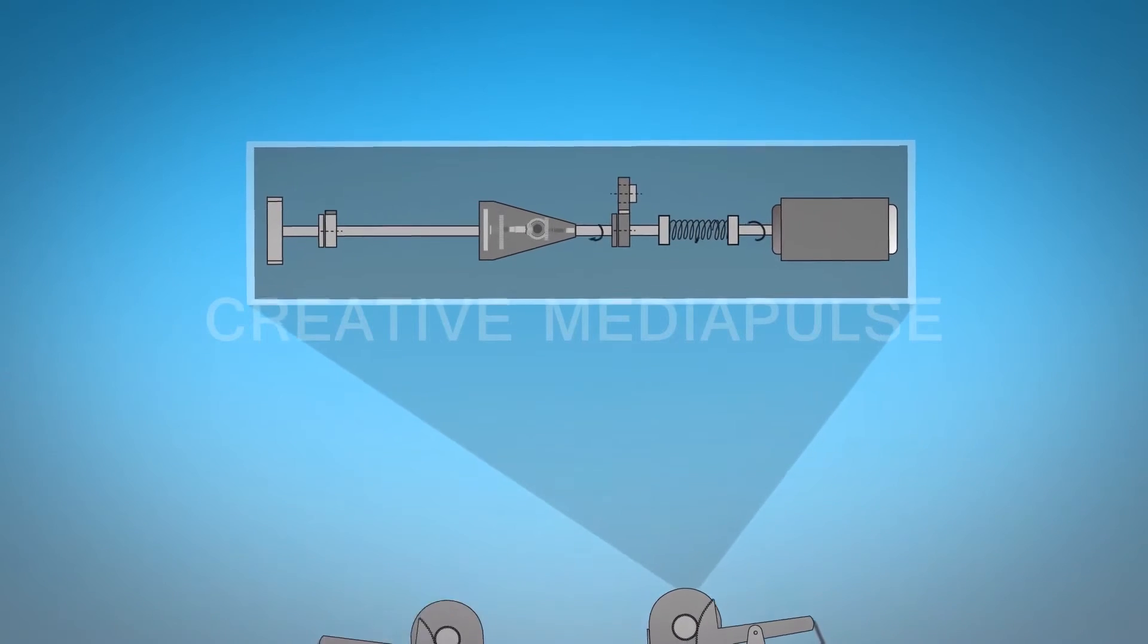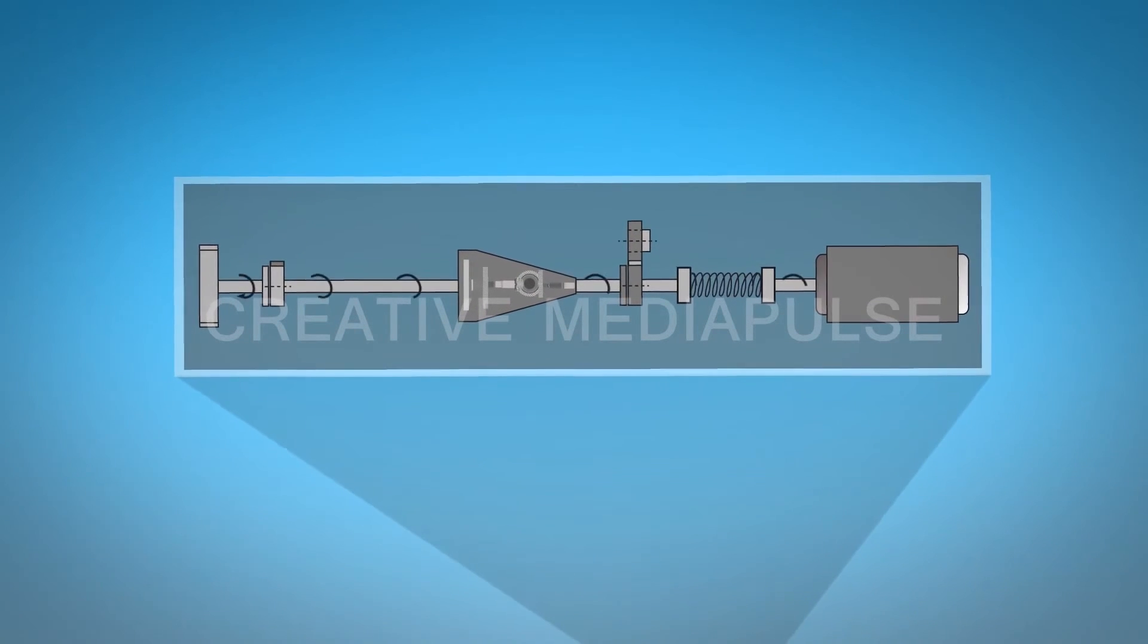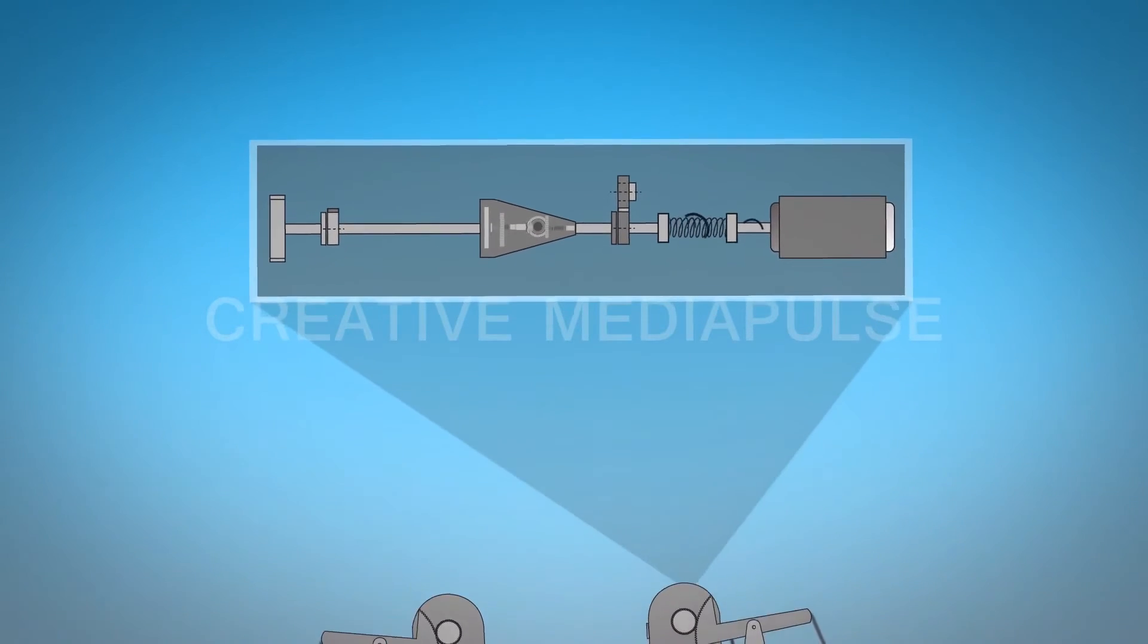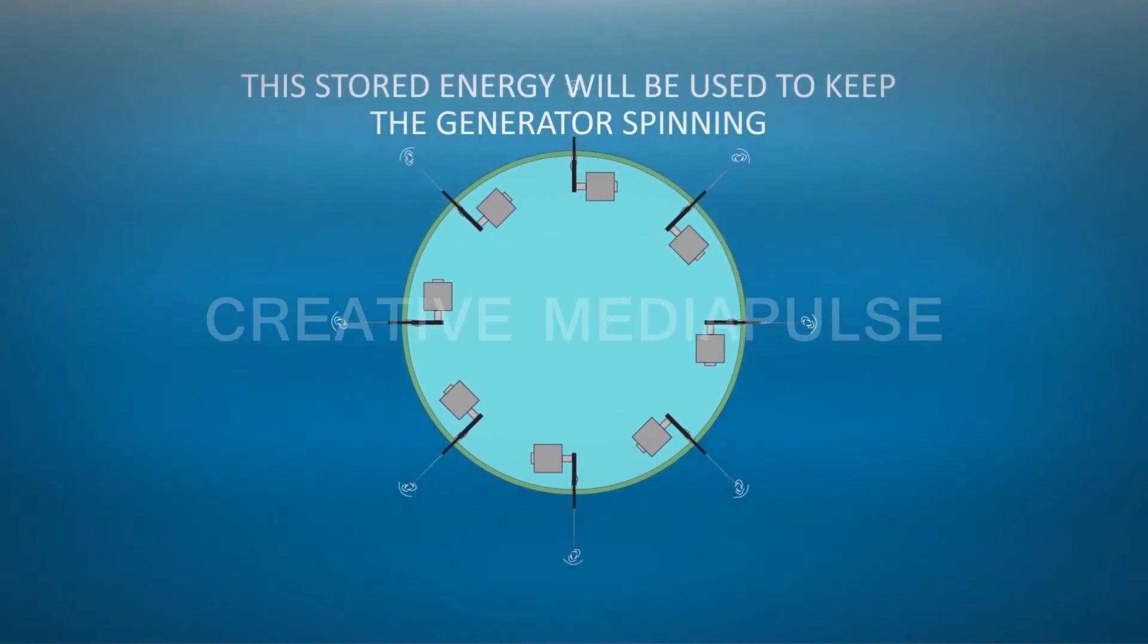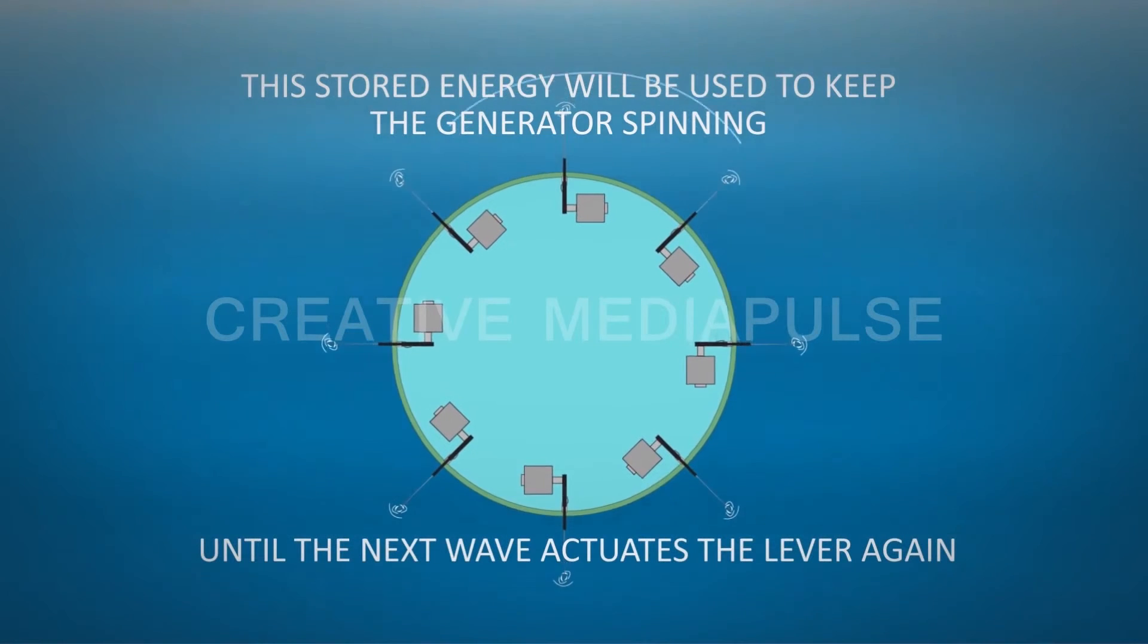Every actuation of lever arm is transferred to the gearbox via one-way clutch to spring. With help of a one-way locking mechanism, the energy can be temporarily stored into the spring by twisting it. This stored energy will be used to keep the generator spinning all the time until the next wave actuates the lever again.